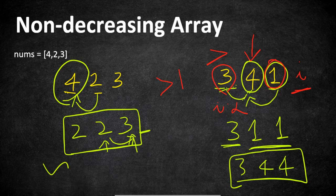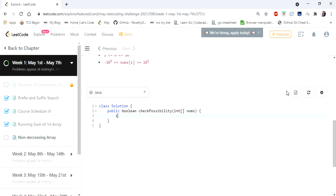So let's go to code now. Let's start by declaring the value modified. This is going to keep track of how many modifications we have made and if that exceeds 1 we are going to return false.